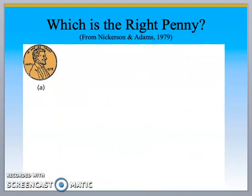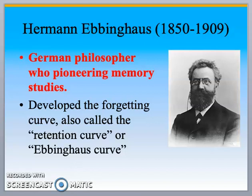It's A — that is the correct penny. Many people actually don't know that, some people do. Herman Ebbinghaus is a German philosopher who pioneered memory studies, trying to understand why people forget and why people remember. What he came up with is the retention curve, also called the Ebbinghaus curve.